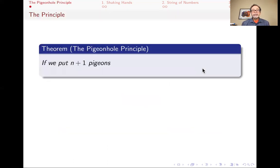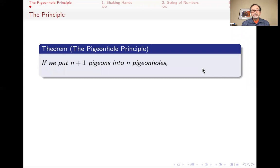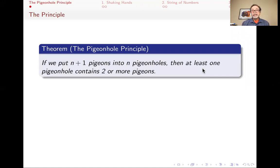So let's get started. The pigeonhole principle is a very straightforward principle, and it's actually pretty amazing that it has any uses given how straightforward it is. It says that if you have n plus 1 pigeons and we put them into n pigeonholes, then at least one pigeonhole will contain two or more pigeons.